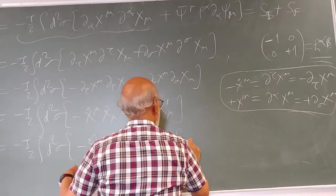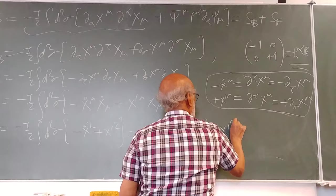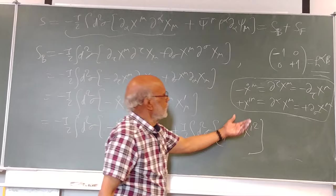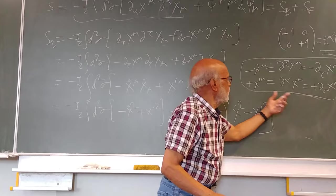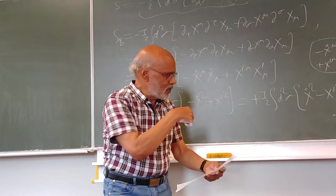This is due to sigma x dot square minus x prime square. x dot is this, and this is x prime.